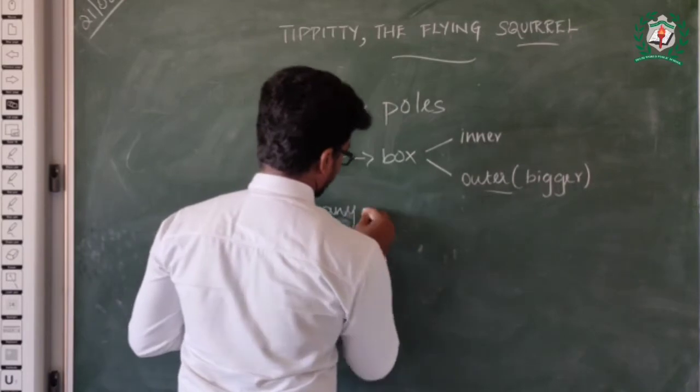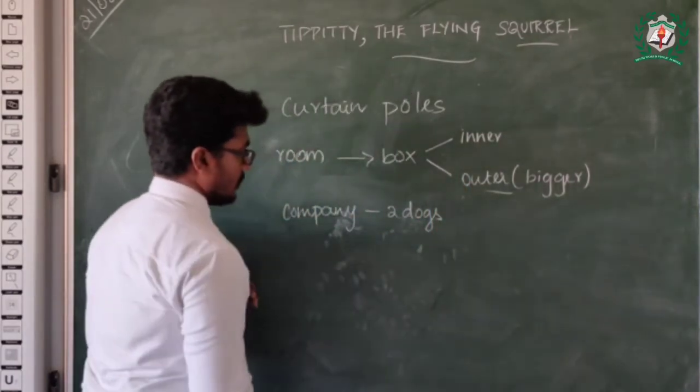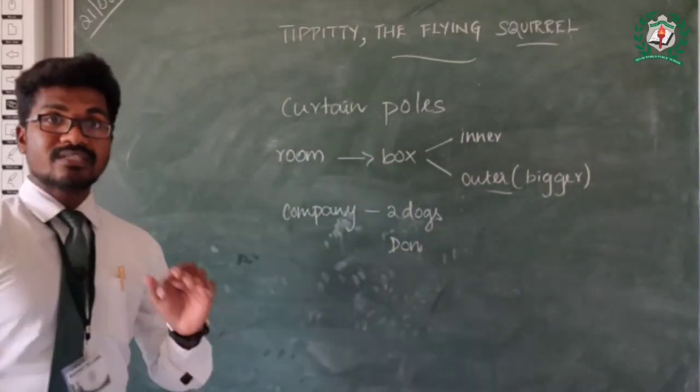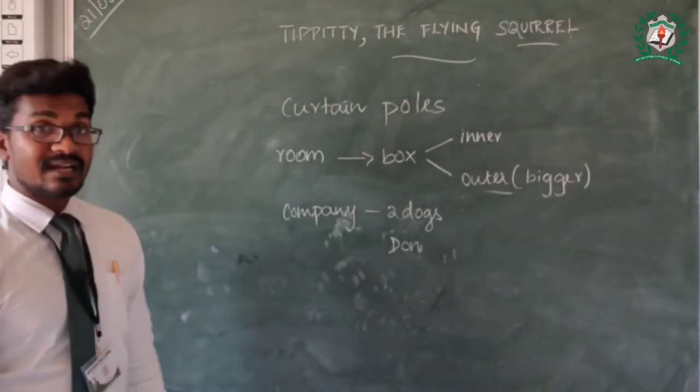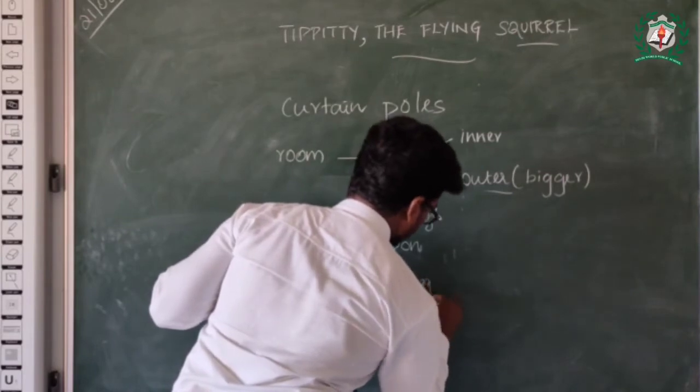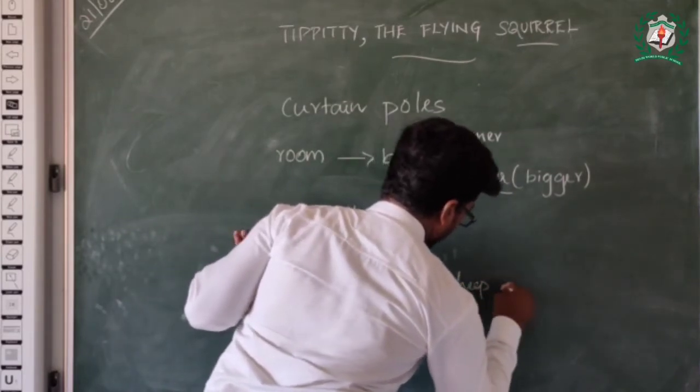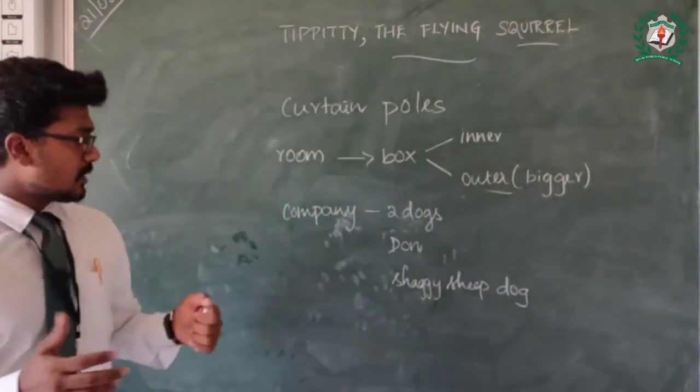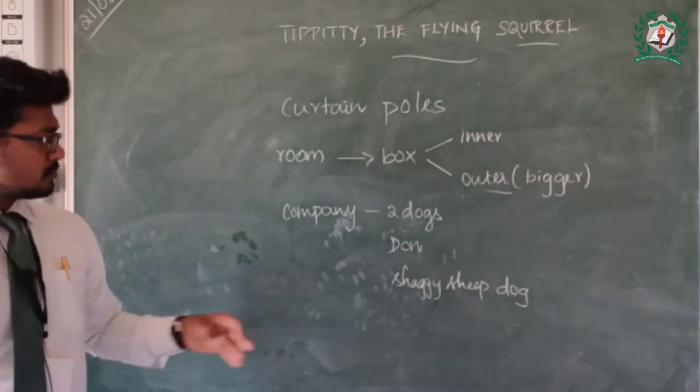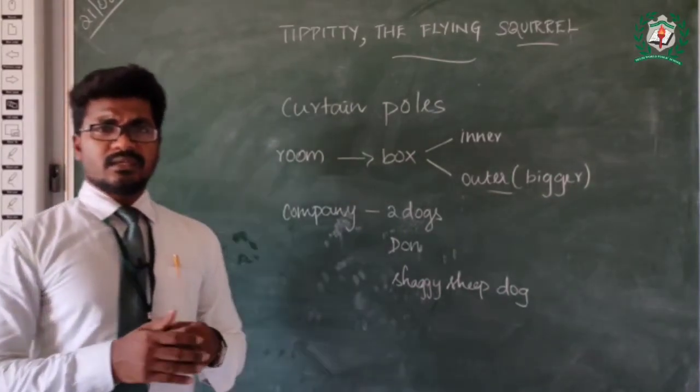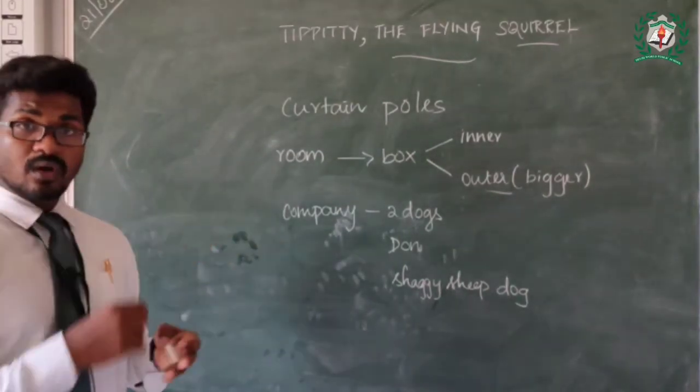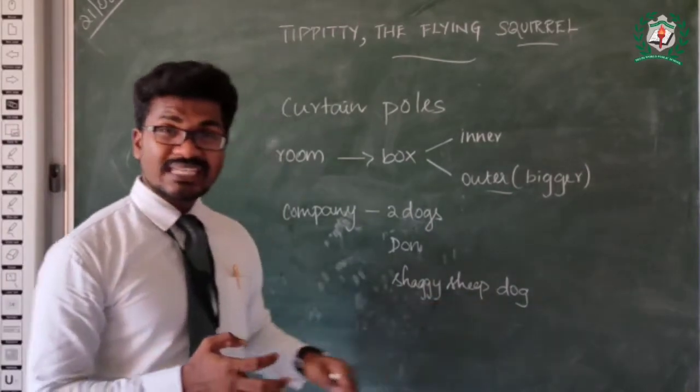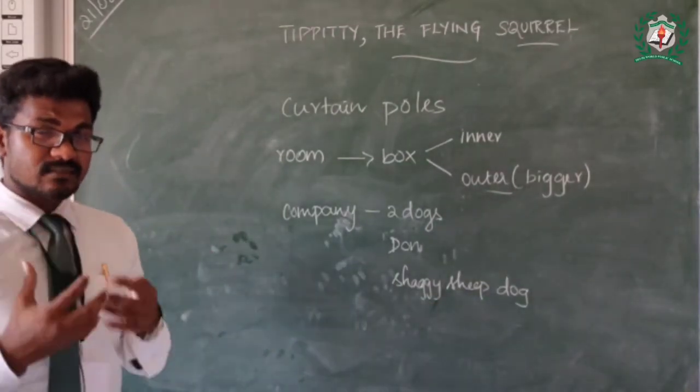Two dogs were the company. One is Don who is in the field, and another one is shaggy sheep dog Brock, Donald Brock. They were the two companions. So whenever it used to go for walk, the three go for walk along with the author. It has bushy tails. Whenever disaster or some danger comes, it used to hide in the bushy tail.